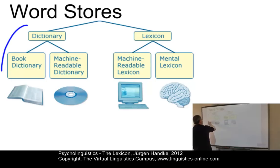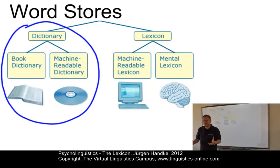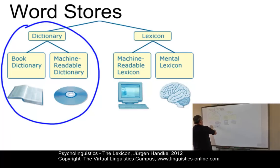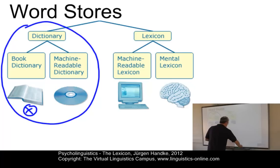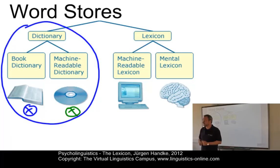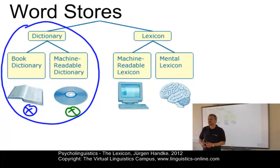On the one hand, we have dictionaries. Dictionaries are word stores that are primarily consulted to retrieve information about the words of a language. Today, dictionaries can be found in two variants: book dictionaries on the one hand, and machine readable dictionaries on the other, which can either be delivered on CD-ROMs or contained on the web. The most common types of book dictionaries are encyclopedic monolingual dictionaries, bilingual dictionaries, or dictionaries for special purposes, such as dictionaries of synonyms.